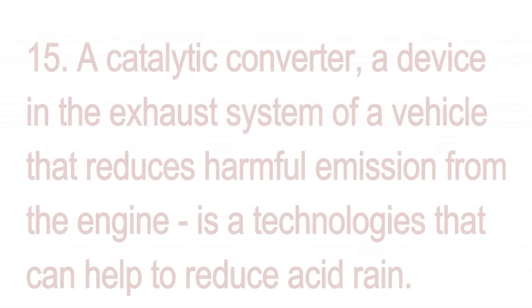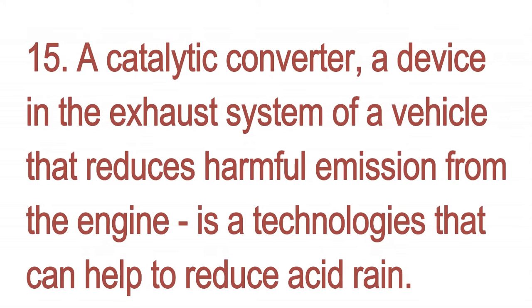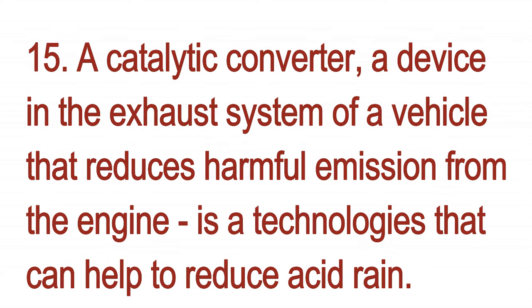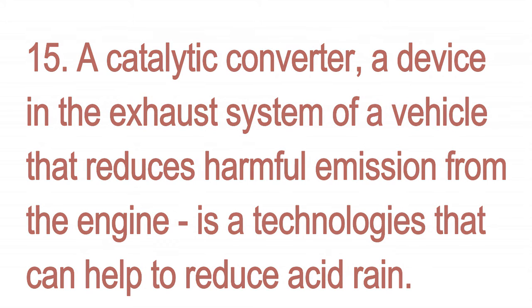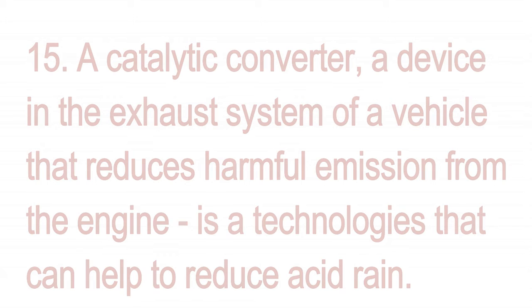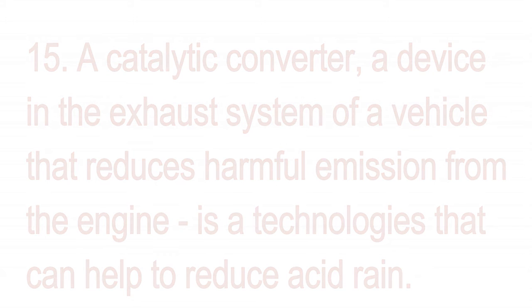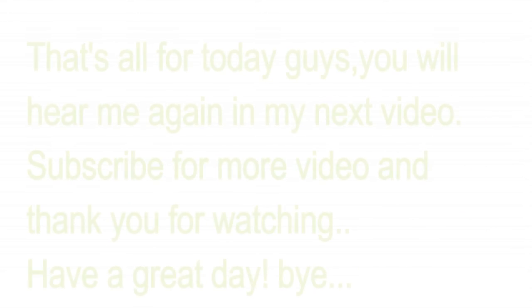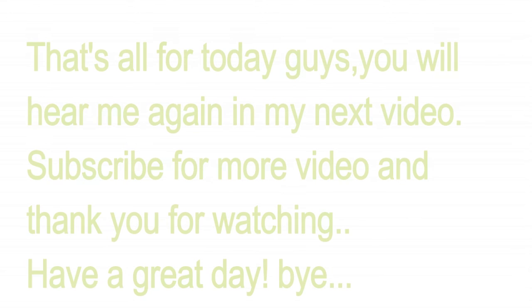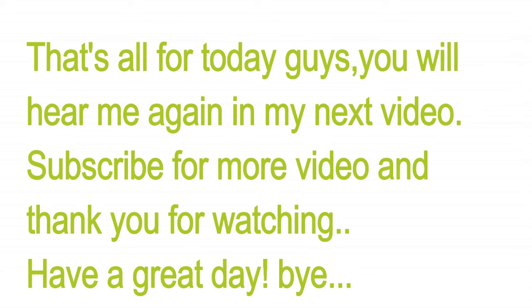Fifteen: a catalytic converter — a device in the exhaust system of a vehicle that reduces harmful emissions from the engine — is a technology that can help reduce acid rain. That's all for today guys, you will hear me again in my next video.